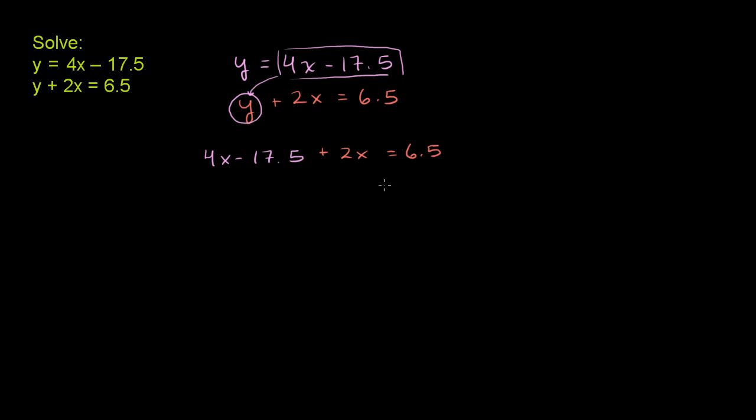And now we have a single linear equation with one unknown. Let's solve for x. So we have a 4x and a 2x. We can add them together. 4x plus 2x is 6x. And then we have 6x minus 17.5 is equal to 6.5.